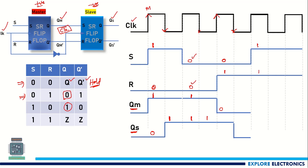The next value change is S=1, R=1. For S=1, R=1, the output is Z — we call it an intermediate or unknown state. At the positive edge of the clock it changes to Z, and QS changes to Z from the negative edge. In the next positive edge it is again S=1, R=1, so Z continues for QM. At the negative edge, the slave also shows Z continuing.